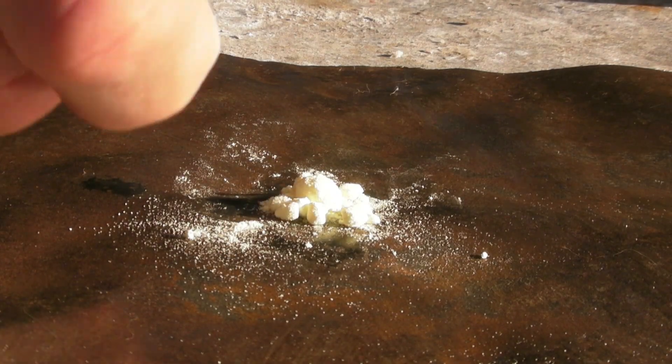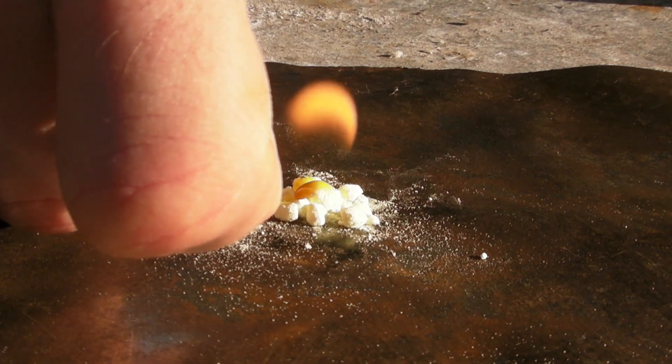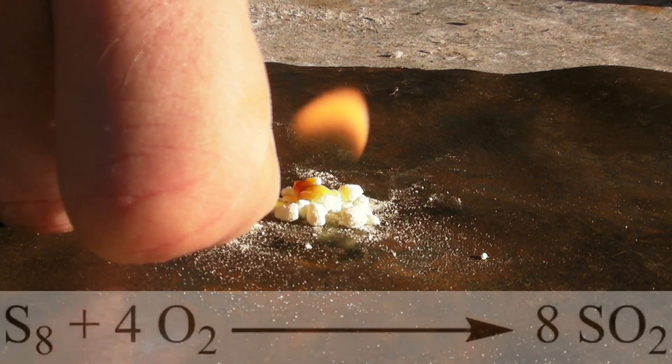When sulfur is ignited, it burns from the liquid with a flame that is not visible in daylight. The sulfur reacts with oxygen to form sulfur dioxide.